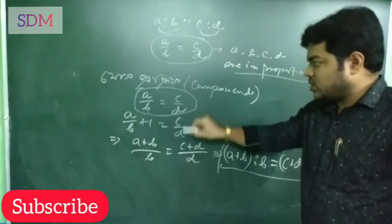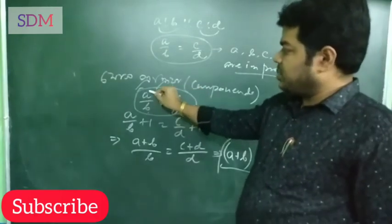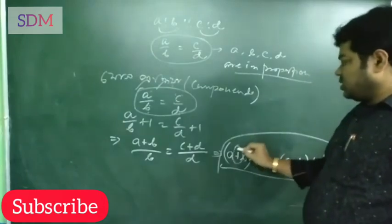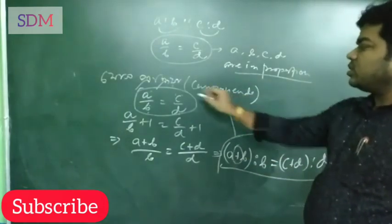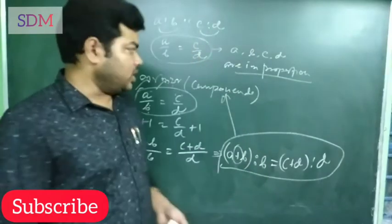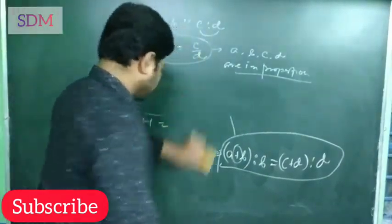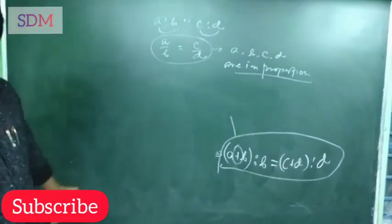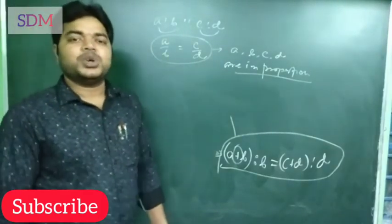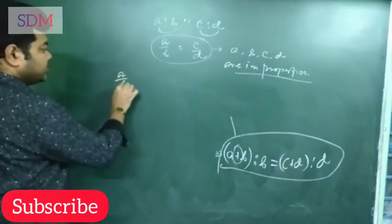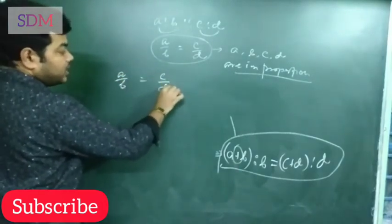A by B equal to C by D. This is class. So, this is what we have to do. Okay, so we have minus 1. That is the one that we have to do. We are going to divide by a divided. Clear? A by B equal to C by D.